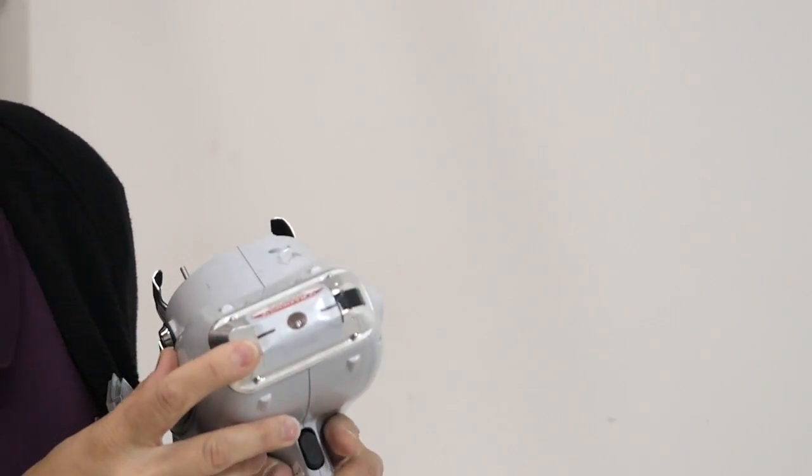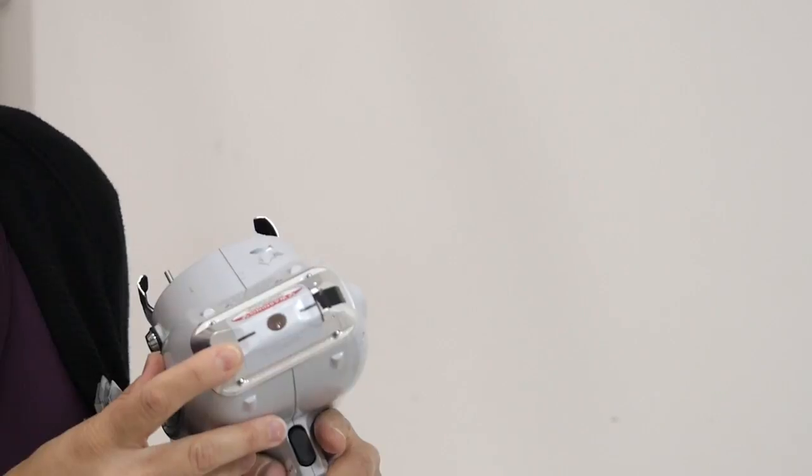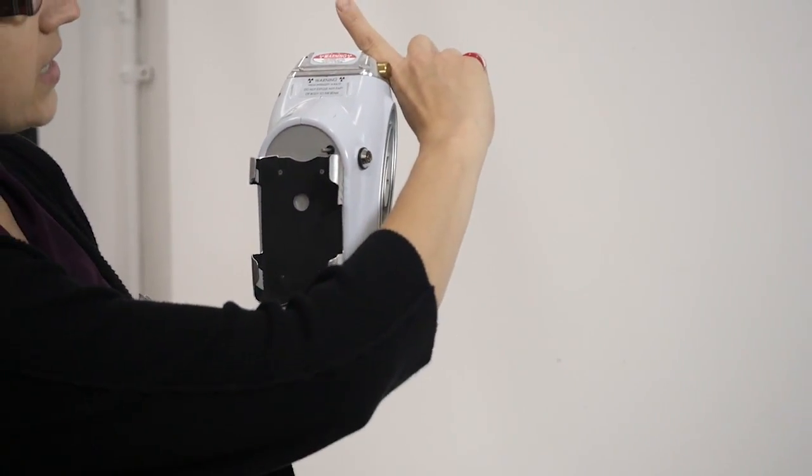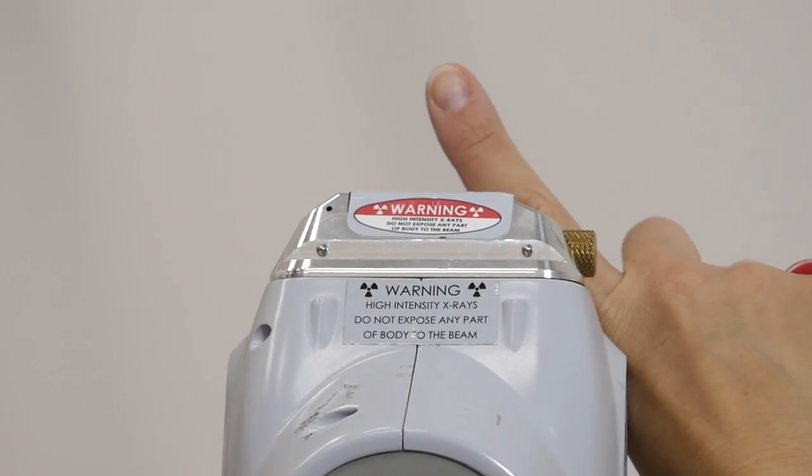Finally the nose of the unit. This is where the X-rays come out. If I position the unit like this, the X-rays would come out at a 45 degree angle.